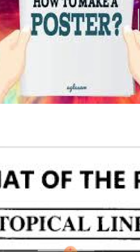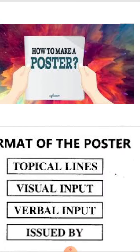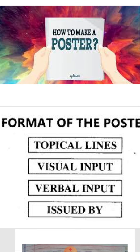Now we will see the layout of a poster. Firstly, you should use topical lines — lines related to your topic. For example, if you are writing a poster on pollution, your first line should be about your topic. Then comes visual input, where you draw something relevant. Then verbal input, where you use slogans and catchy lines. Finally, 'Issued by' — indicating who is issuing this poster.